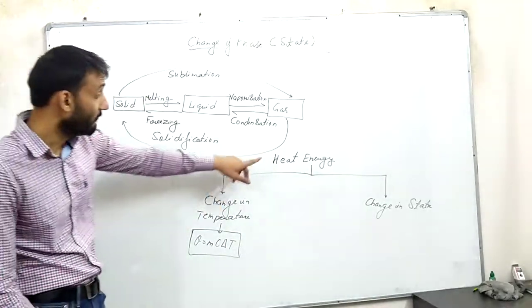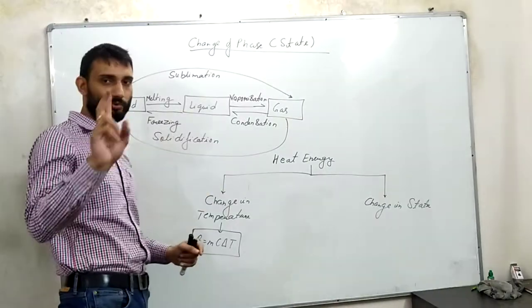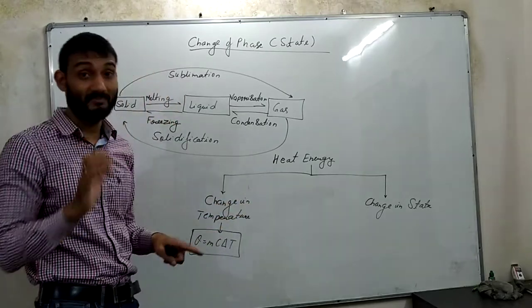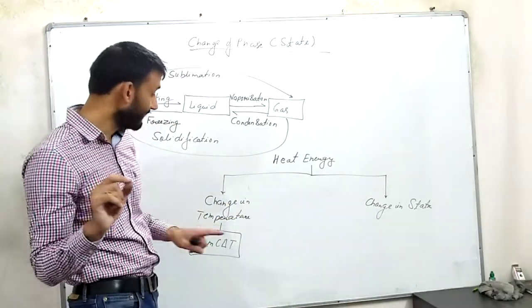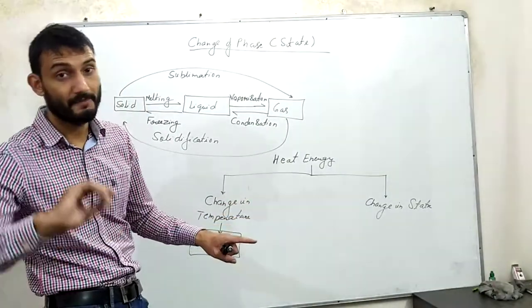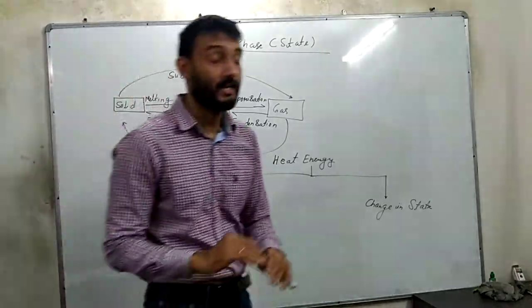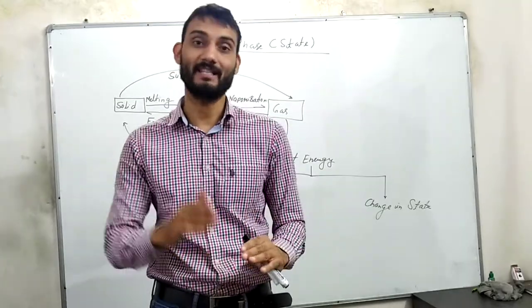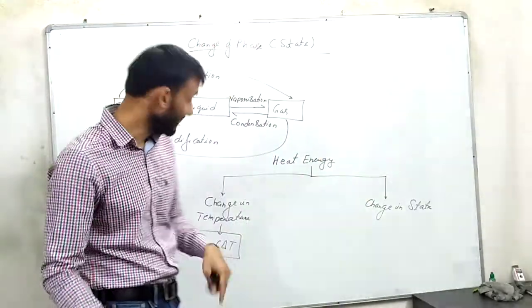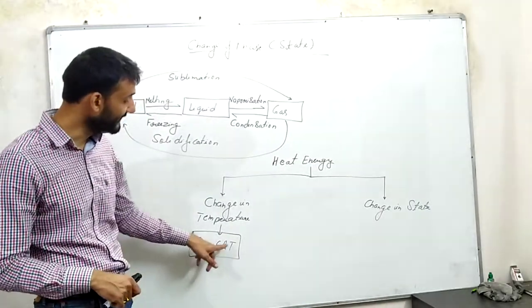Whenever we heat a substance, this heat energy can do two things for us. Number one, it can bring a change in the temperature of the substance. Keep one thing in mind that whenever this heat energy is bringing a change in the temperature of the substance, that time there will be no change in the state of the substance. Whenever the temperature is increasing, there is no change in state, and the formula we have studied is Q equals NcΔT.